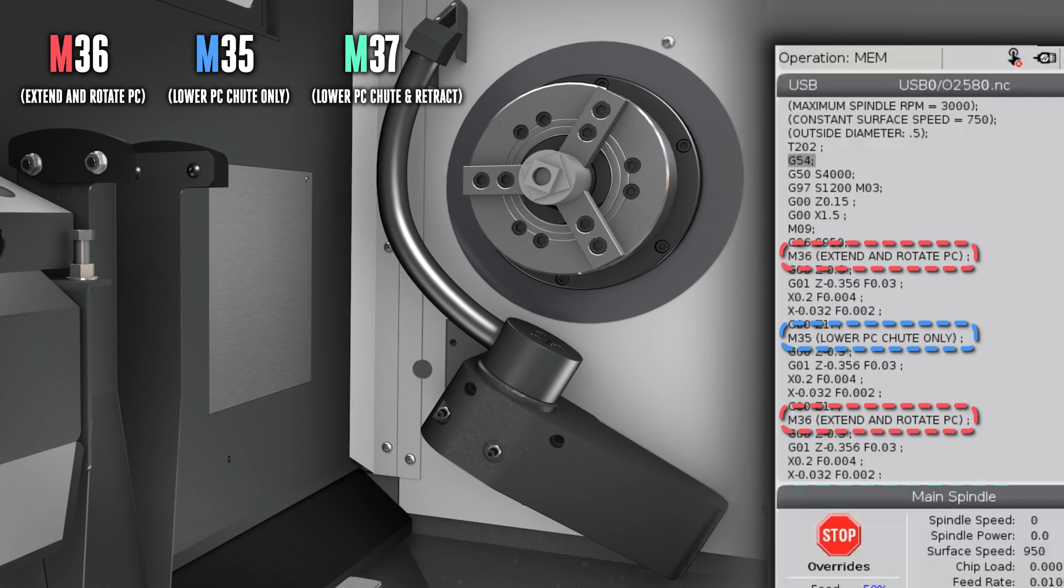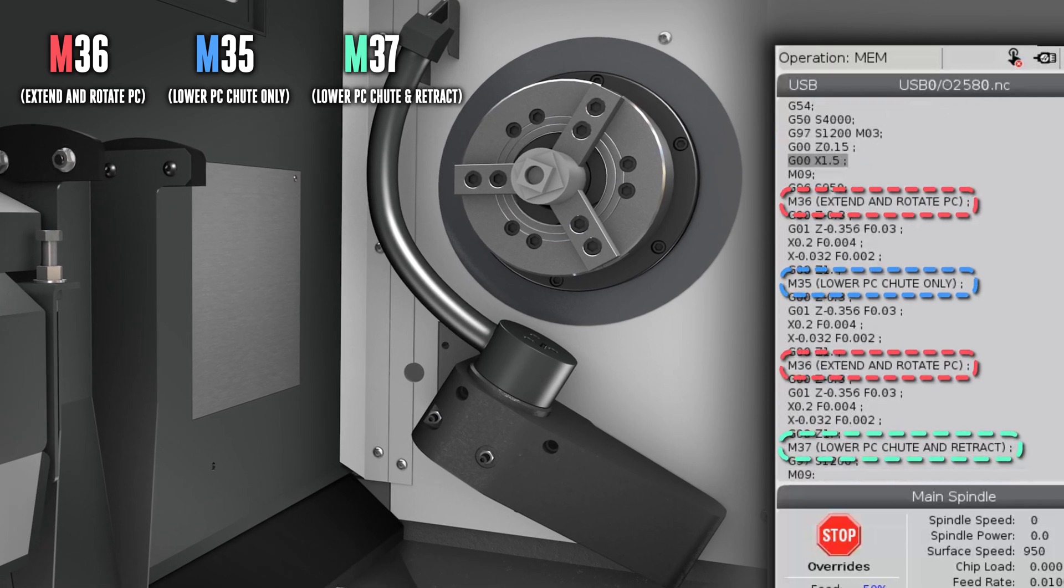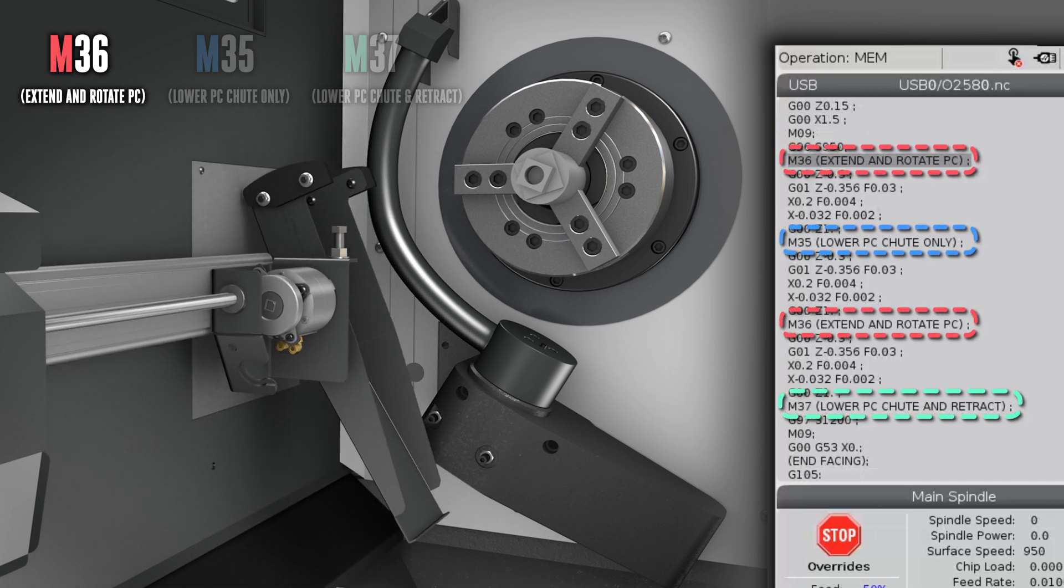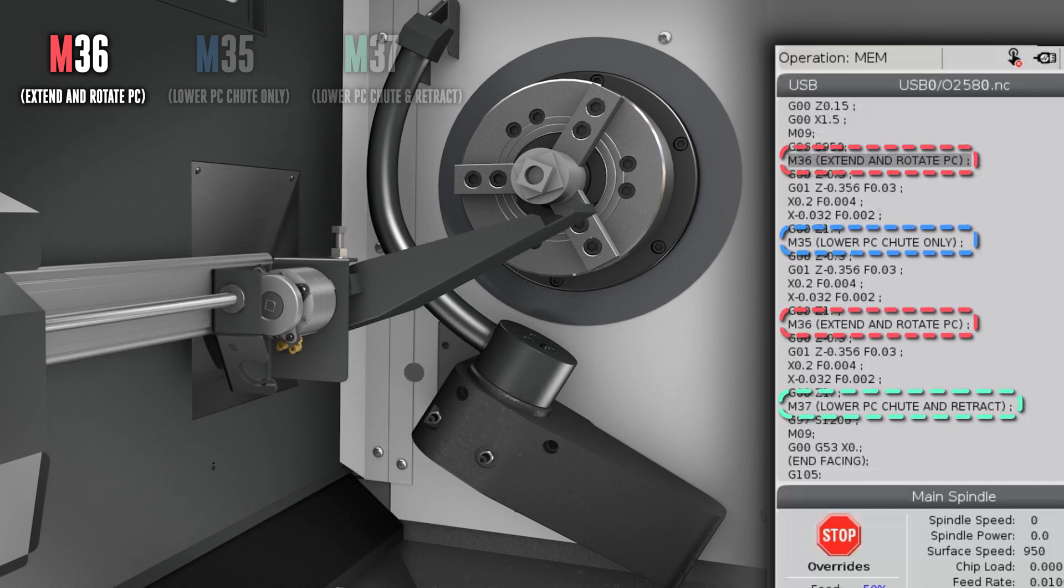Place M36 in your program right before the part-off tool is called. M36 moves the parts catcher forward from its stowed position and rotates the chute upwards under the workpiece.